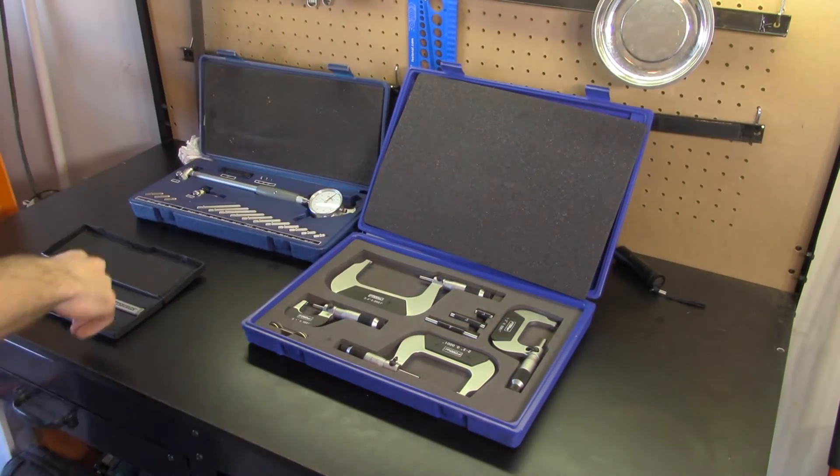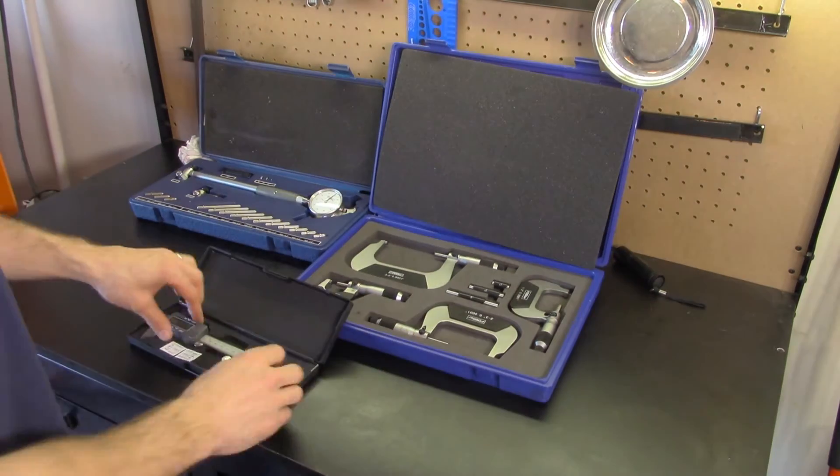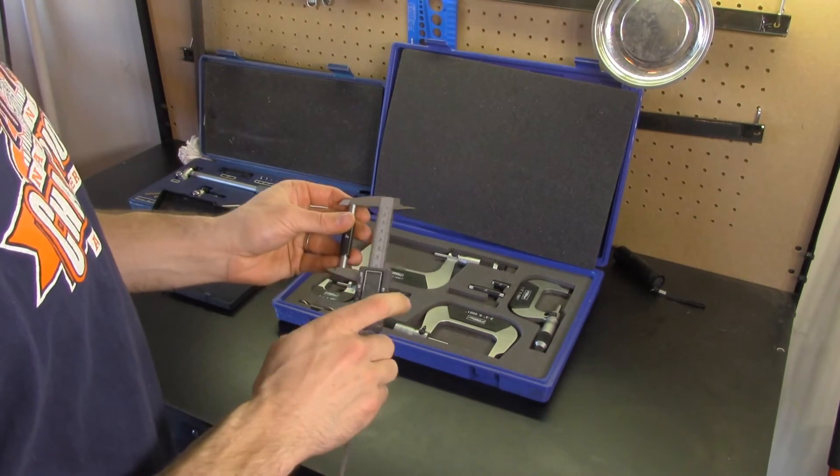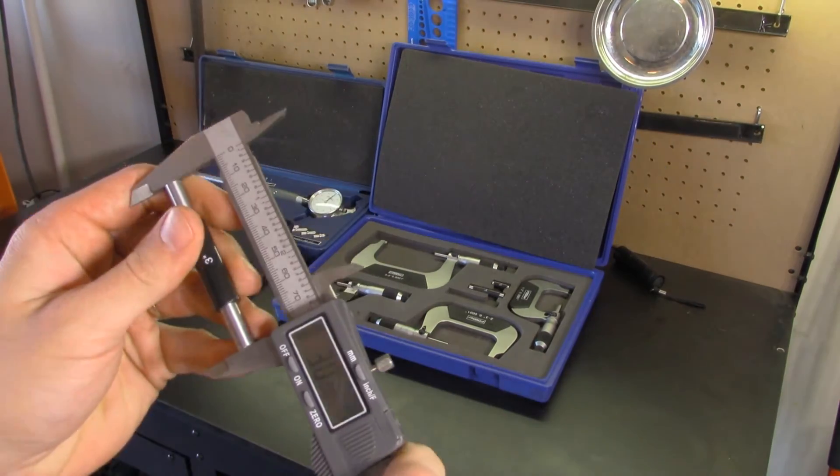Next up, we have our Harbor Freight Digital Calipers. These are cheap and inexpensive. To ensure their accuracy, we use our micrometer standards to see how accurate they really are.